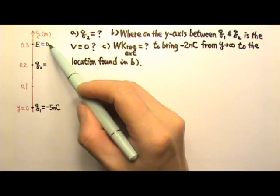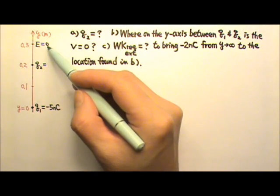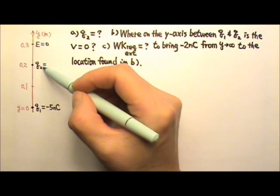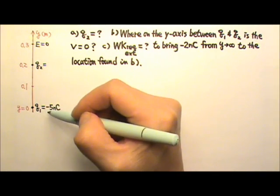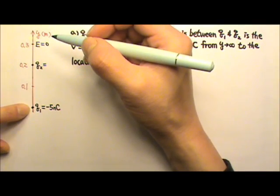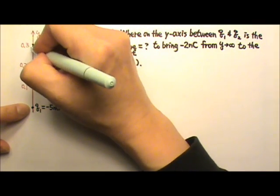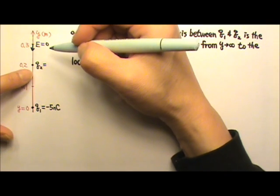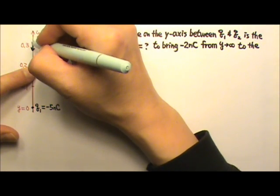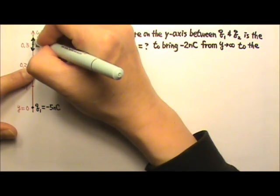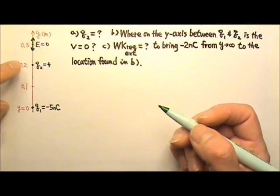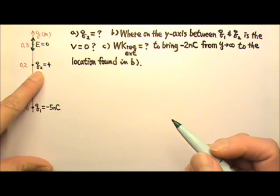Because the electric field produced by the two point charges is zero at that point, the electric field produced by the two charges must be equal in amount and in opposite directions. The field produced by the Q1 negative charge goes into the negative charge, so the field produced by Q2 must go upward, away from the charge — meaning Q2 has to be a positive charge. We still need to find how much Q2 is.